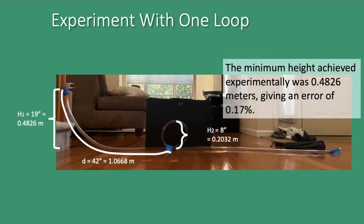Experimentally, I found that the minimum height the ball could travel around the loop was 0.4826 meters, which is really close. I got an error of 0.17%.